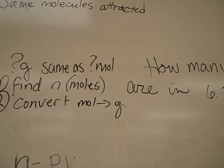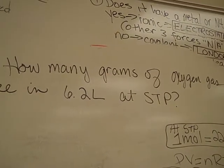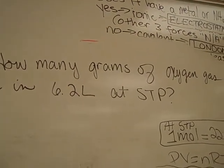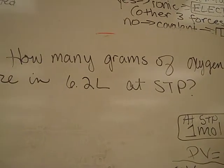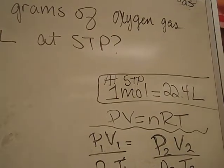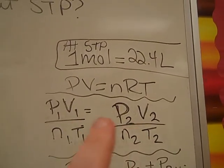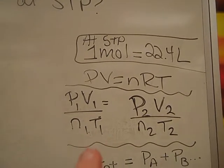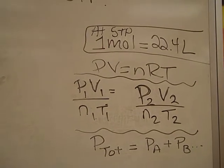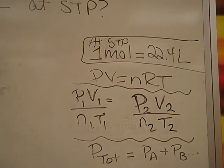For a problem with one gas at one set of conditions, the volume's not changing, it doesn't mention temperature or pressure changing, we have the choice of using PV equals nRT. We don't need the modified gas law because that one has changing conditions. We don't have a mixture of gases, so we won't use Dalton's Law of Partial Pressures.